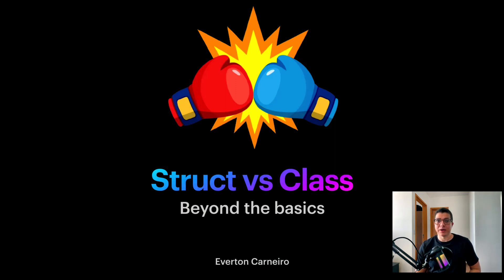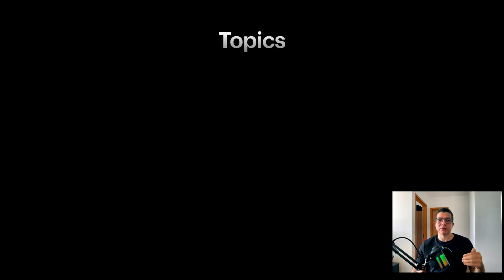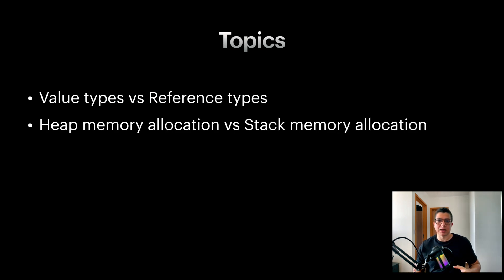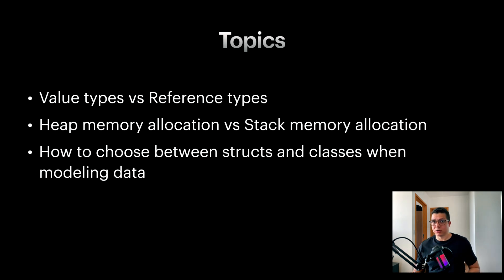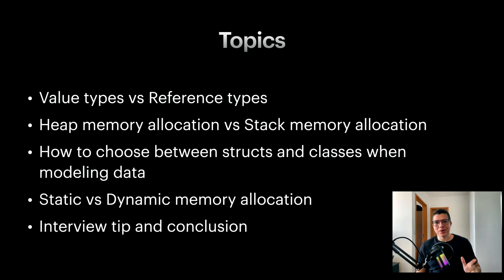Hello guys, I'm starting a new series where I tackle the most common iOS interview questions. In today's video we're going to discuss the most common interview question: what's the difference between a class and a struct? I want to go beyond the surface-level value types versus reference types explanation and discuss topics like heap vs stack memory, when to choose a class over a struct, and the difference between static and dynamic memory allocation, so you can be prepared for any follow-up questions.